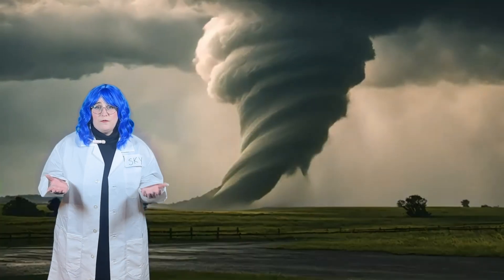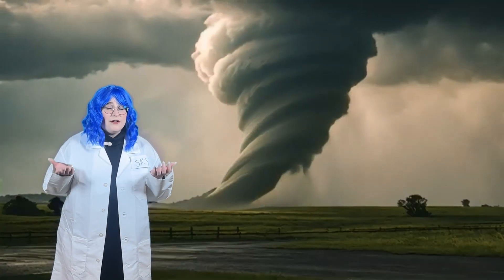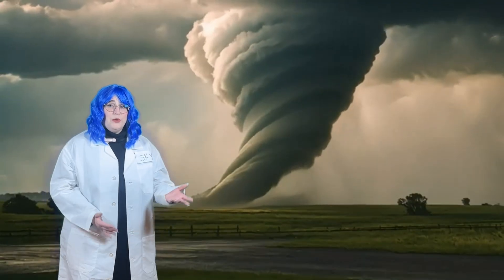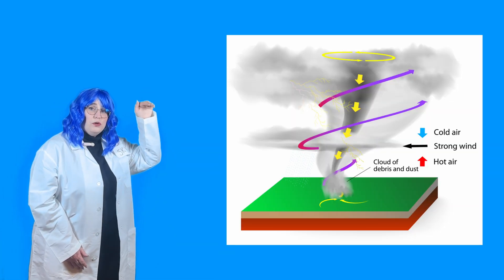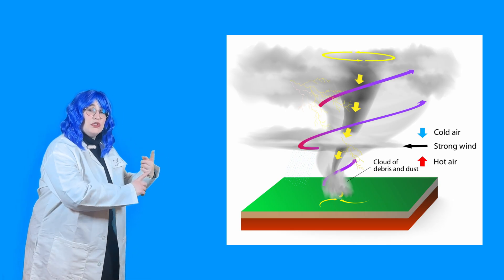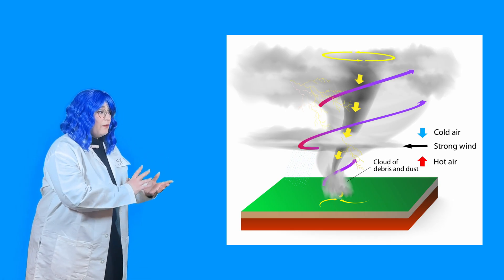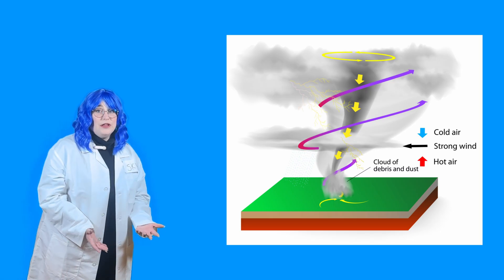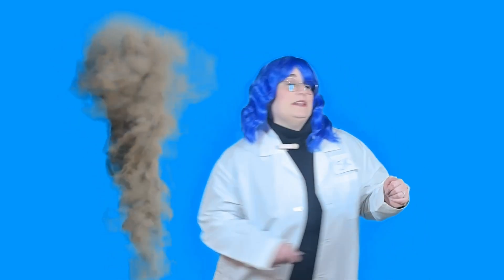So, where do TORNADOs come from? How do they start in the sky? What happens is warm air rises and cold air sinks. And when that happens, it starts to spin. And when it spins, a TORNADO can form in the sky. And guess what? TORNADOs always spin. Some spin to the right, and some spin to the left.